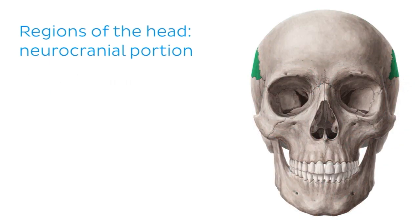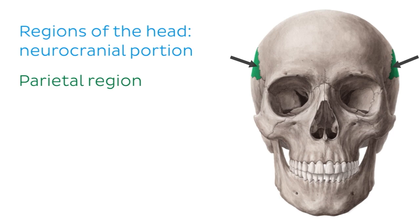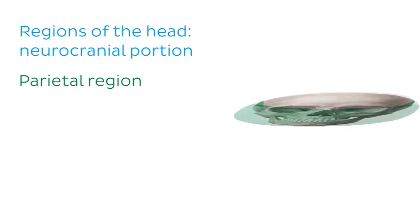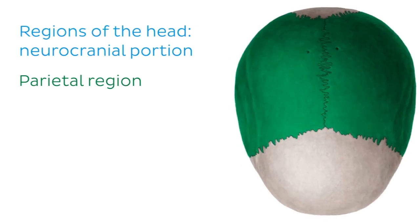The next region is the parietal region, which refers to the area on either side of the head that overlies the parietal bones of the skull, as indicated by the arrows here. If we flip the skull to view it from above, we can see the parietal bones much more clearly, and that they are roughly square in shape.